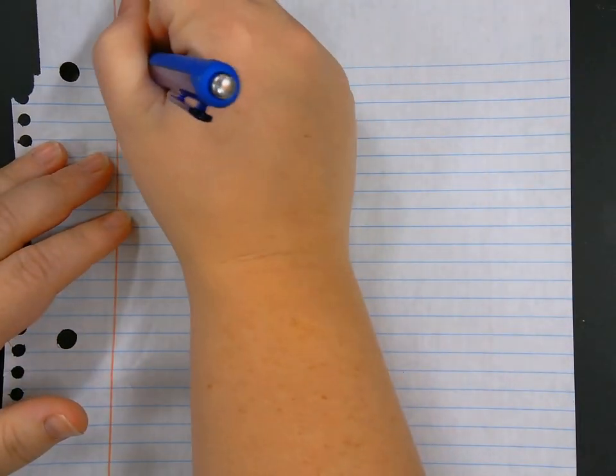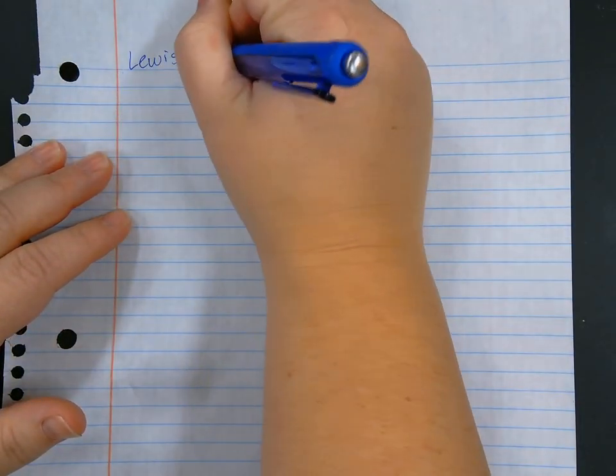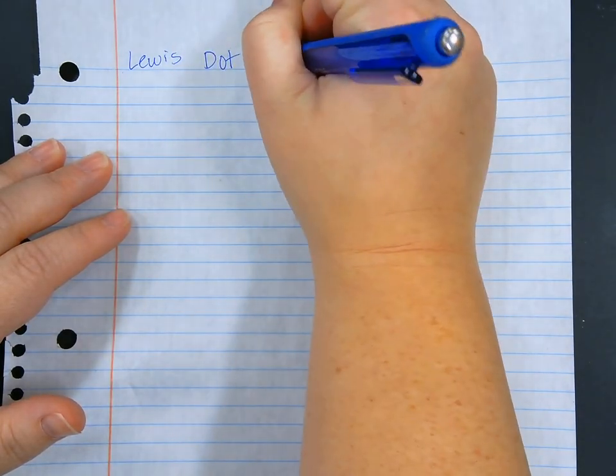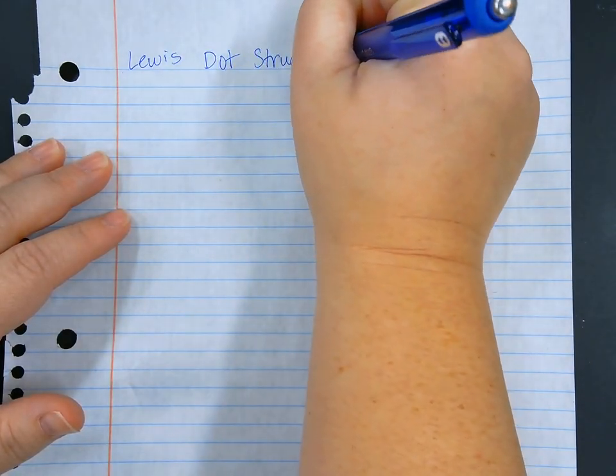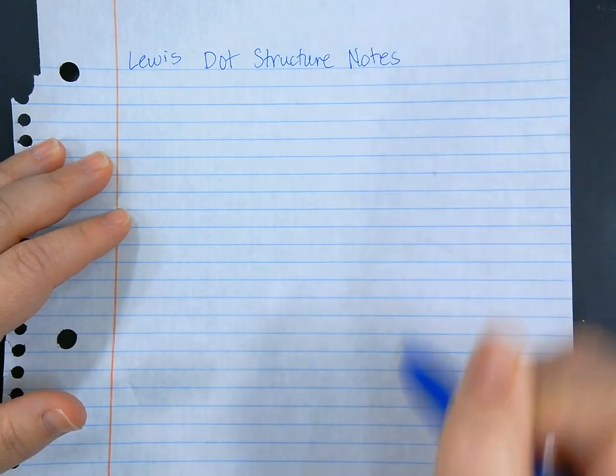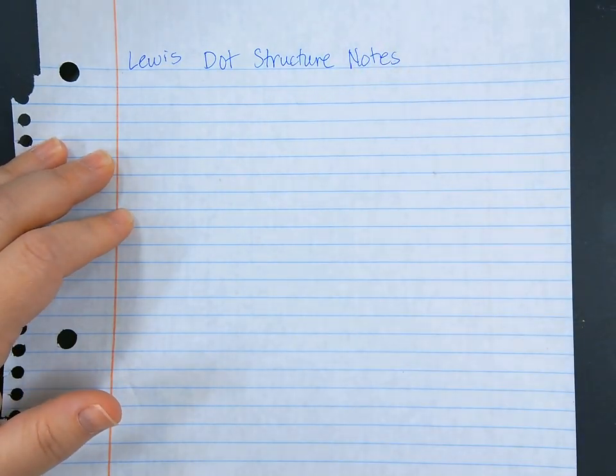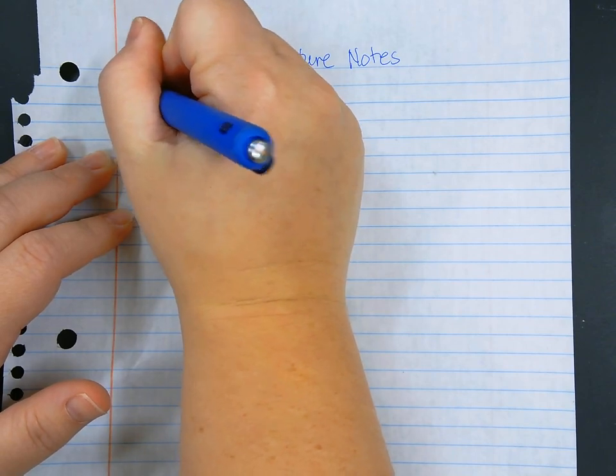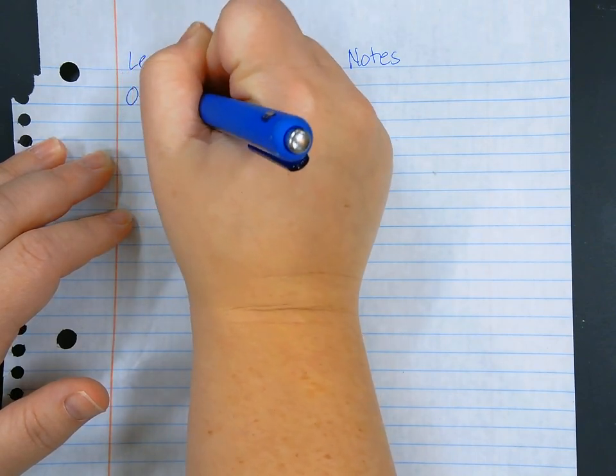All right guys, today we're going to take a look at Lewis dot structures and how to draw them. You can title your page Lewis dot structure notes, and the reason we do this is because it relates to the patterns on our periodic table. We're going to start with an example - we're going to start with oxygen.